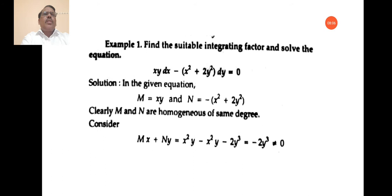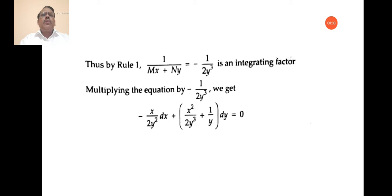M = xy is degree 2; N = x² + 2y² is also degree 2. Therefore M and N are homogeneous functions of the same degree. Consider Mx + Ny = x²y − x²y − 2y³ = −2y³, which is not equal to 0. Then by Rule 1, 1 by (Mx + Ny) = −1 by 2y³ is the integrating factor. Multiplying the equation by −1 by 2y³, we get: (−x/2y²)dx + (x²/2y³ + 1/y)dy = 0.